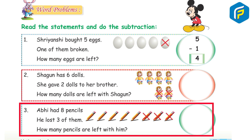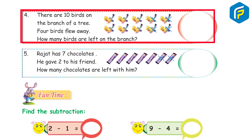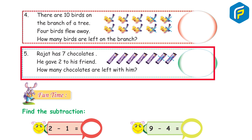3. Abhi had 8 pencils; he lost 3 of them. How many pencils are left with him? 4. There are 10 birds on the branch of a tree; 4 birds flew away. How many birds are left on the branch? 5. Rajat had 7 chocolates; he gave some to his friends. How many chocolates are left with him?